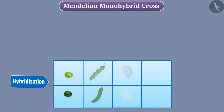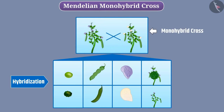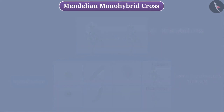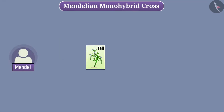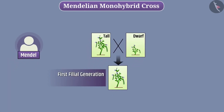The hybridization of two garden pea plants with a pair of contrasting characters is called monohybrid cross. The tallness and dwarfness are contrasting characters for height. Mendel hybridized a tall plant with a dwarf plant and produced the first filial generation, that is F1 generation, from the seeds obtained. All the plants of this generation were tall.